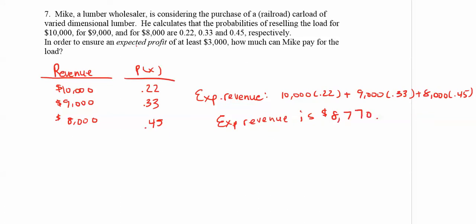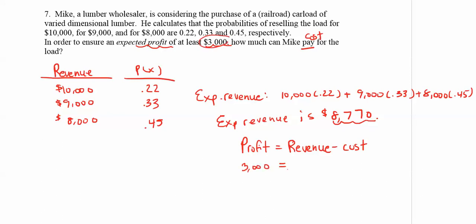In order to ensure an expected profit of at least $3,000, how much can Mike pay? That's going to be his cost for the load. We remember that profit equals revenue minus cost. This holds true for expected profit and expected revenue as well. Our expected revenue is $8,770, and we want our expected profit to be $3,000.